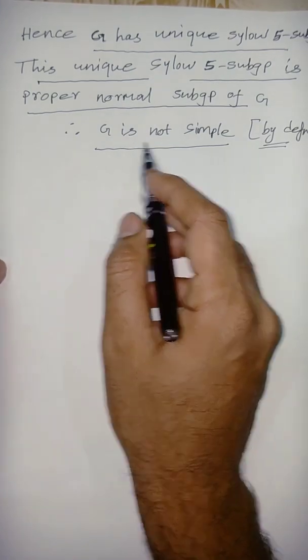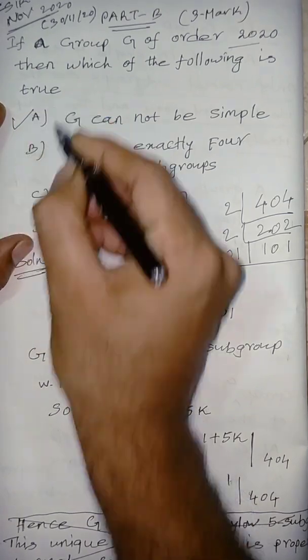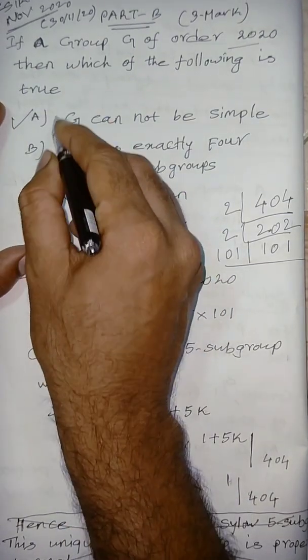So G is not simple. So the first option is correct because G cannot be simple, is it right?